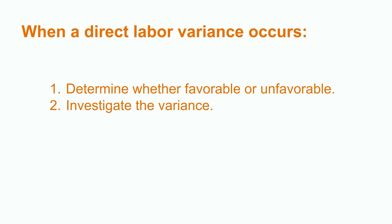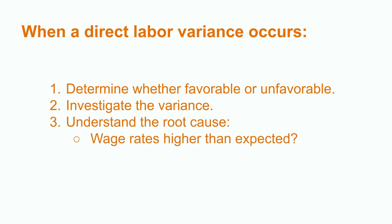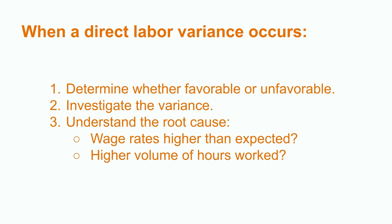In the example where the company had a $20,000 unfavorable direct labor variance, they'll want to get an understanding of the root cause behind this. If management can determine why they spent more than planned, then they can try to rectify the issue so that it doesn't continue going forward. Did the variance arise as a result of the wage rates being higher than expected? Or was it the result of a higher volume of hours being worked than expected, due to unexpected overtime or mismanagement of the workforce? These are important questions that will need answering in order to improve things going forward.